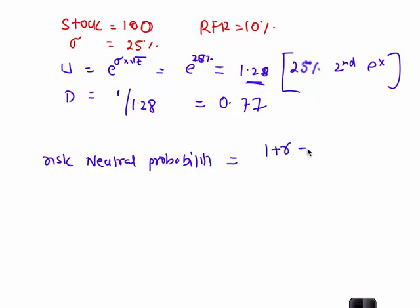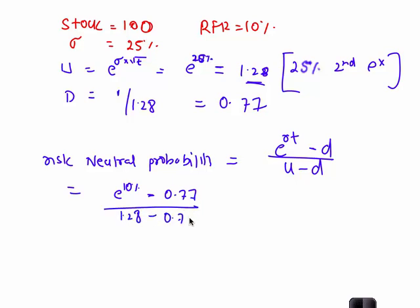And the formula we will use for risk-neutral probability: 1 plus R or using continuous compounding, e raise to RT minus D divided by U minus D. So in this case, it would be e raise to 10% minus 0.77 divided by 1.28 minus 0.77.